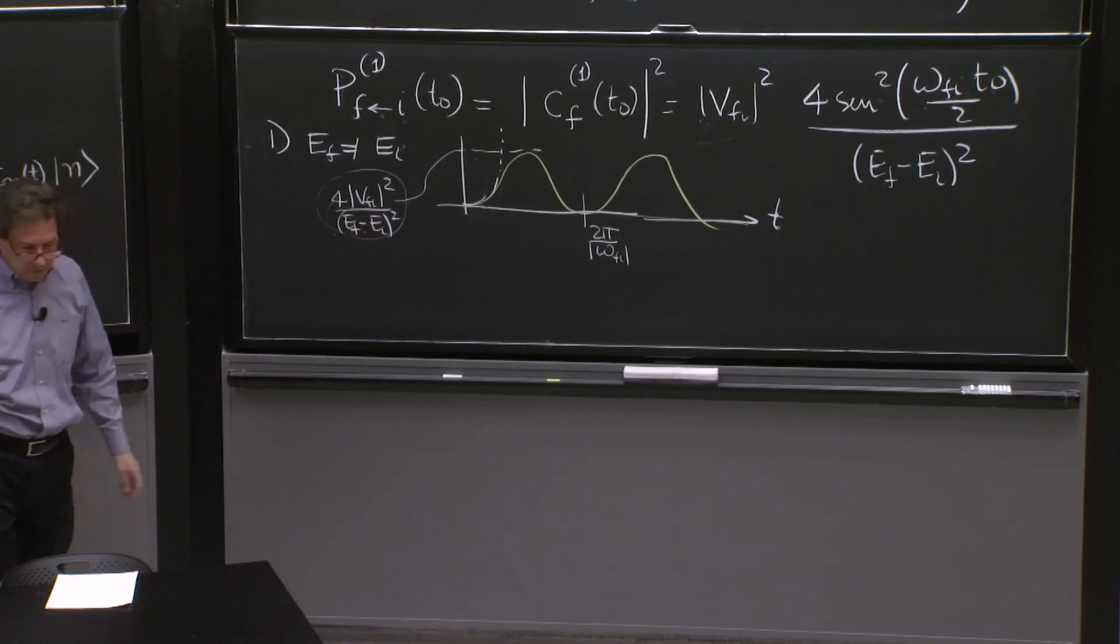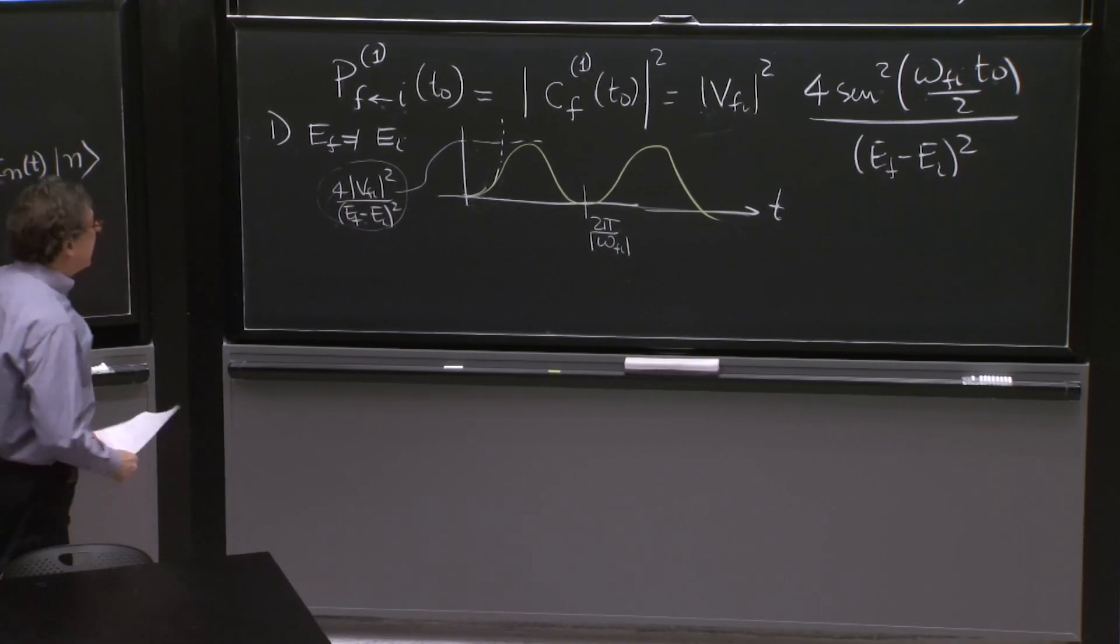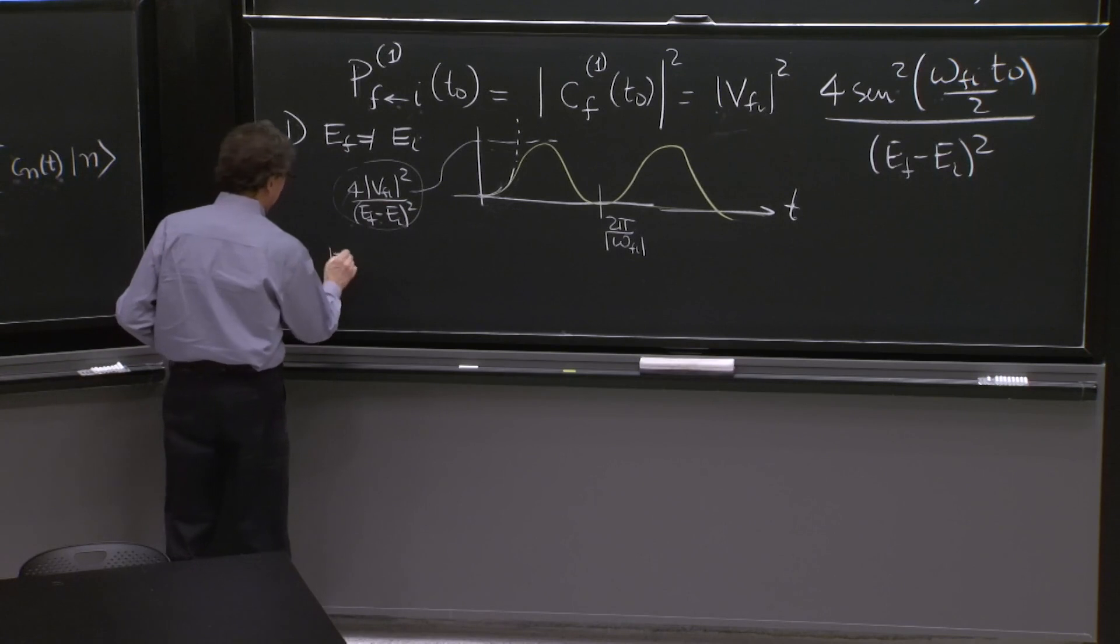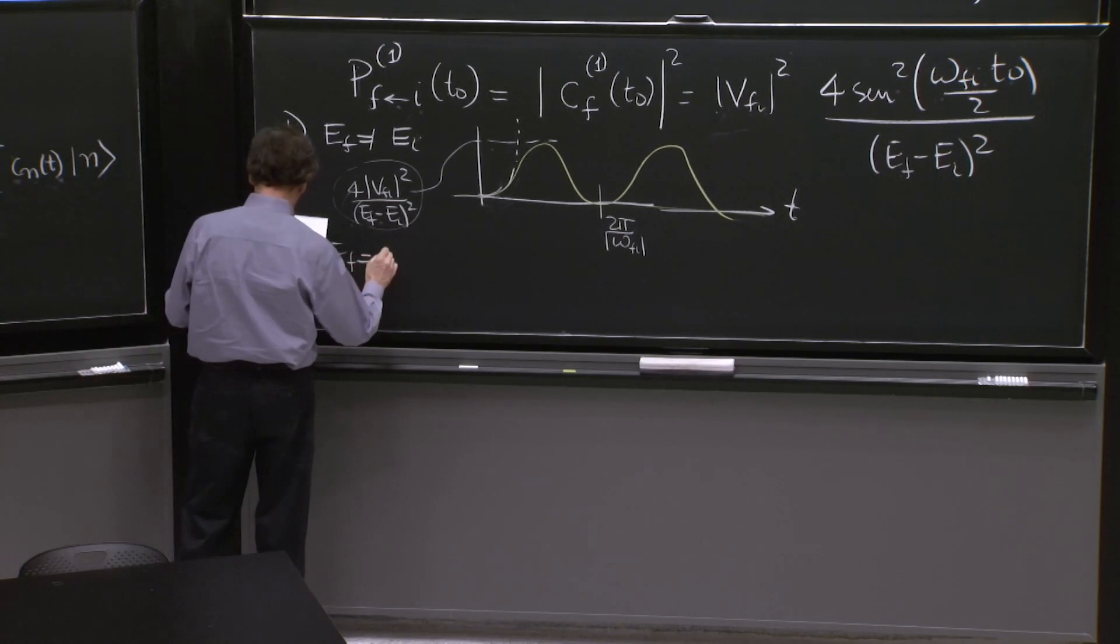This is saying that transitions that change the energy are not that favored. A constant perturbation doesn't supply really energy to produce transitions that change the energy much. And they are suppressed. So they produce them, but they are suppressed.